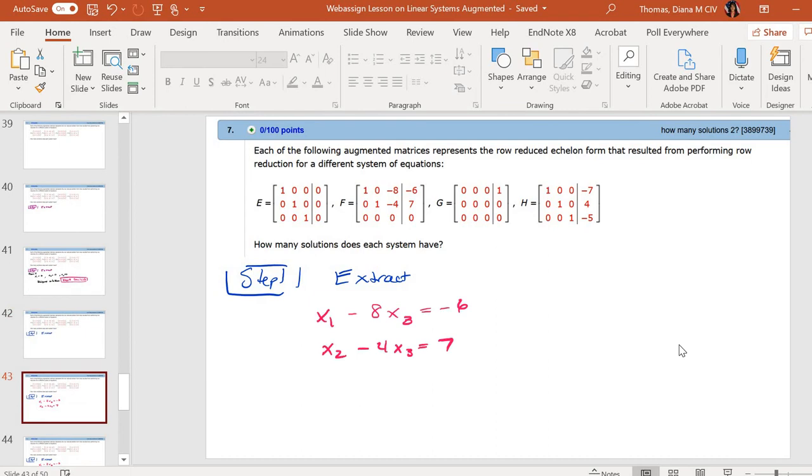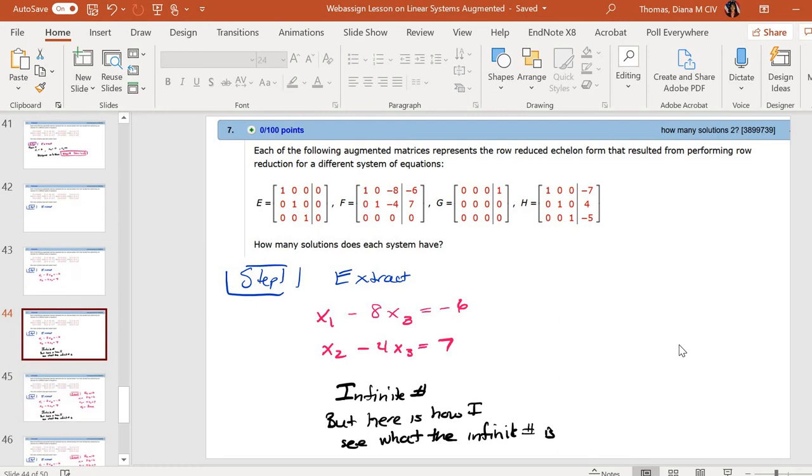So here on the second one, the first step is to extract. So I get x1 minus 8x3 is equal to minus 6. And the second equation is x2 minus 4x3 is equal to 7. There's an infinite number of solutions.